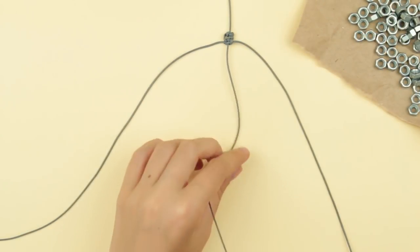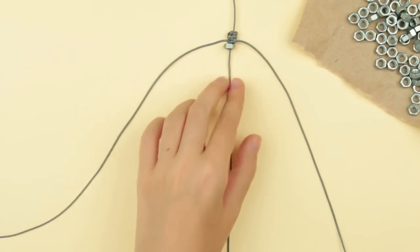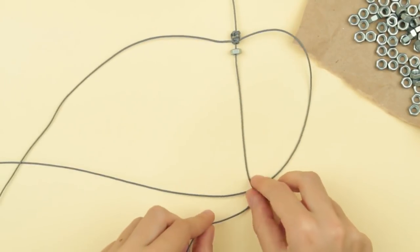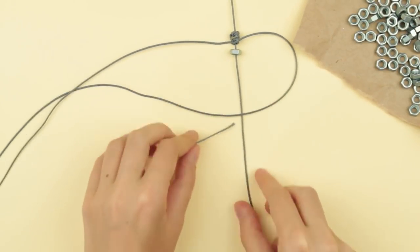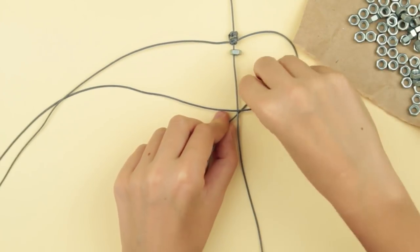Now take a screw nut and thread it on the center cord of the bracelet. Take the right strand, pass it over the center cord, put the left strand under them and pull snugly.